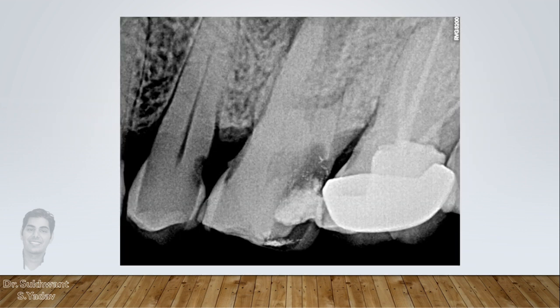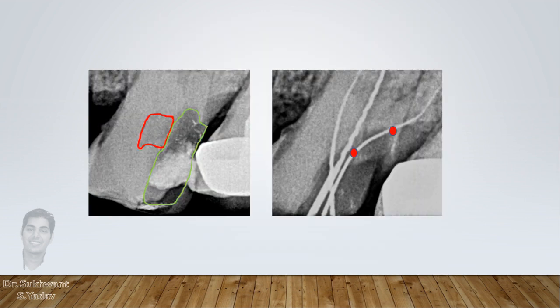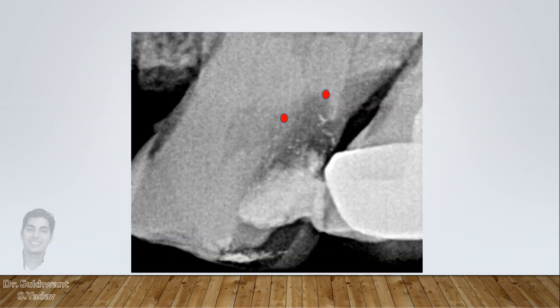When extensive or subgingival caries is present and canals fall in the carious portion, the position of the canal usually changes. This is because the canal is not present at the CEJ level in that case. Canals usually flare going apically, which changes the orifice location. For example, if caries is present distally in a maxillary molar and going subgingival, you will find the distobuccal canal more distally than expected.